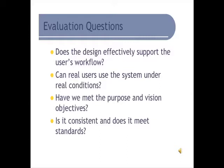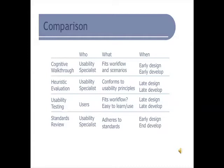In human-computer interaction, we look at four big questions: Does it support your workflow? Can real users use it? Have we met the purpose? And is it consistent and does it meet organizational standards? There are three main ways that things are evaluated, and if you're not seeing these evaluations, you might want to think about whether the system is meeting your needs. Evaluations differ in purpose, who does them, when they're done — whether early in design or later — and how often.